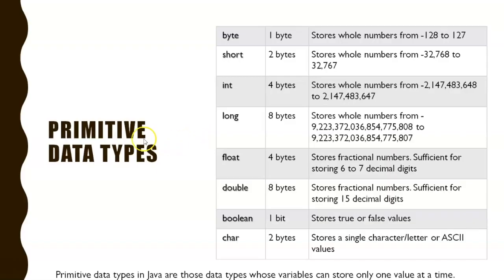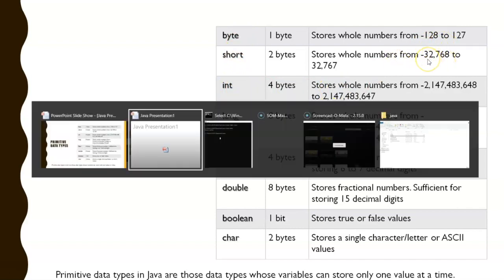Primitive data types in Java are those whose variables can store only one value at a time. When storing byte, short, integer — these all belong to numbers. For example, if I want to use a number in a Java program...